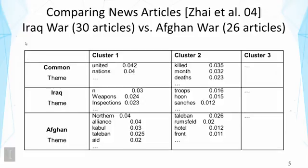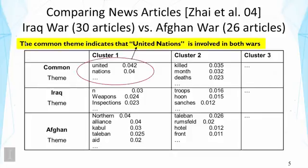Here are some simple results from using such a model — not necessarily exactly the same model, but similar models. On this slide, you see results comparing news articles about Iraq War and Afghanistan War — about 30 articles on Iraq War and 26 articles on Afghanistan War. The goal is to reveal the common topics covered in both sets of articles and the differences or variations of the topic in each of the two collections. The context is explicitly specified by the topic of collection. Results show there is a common theme — cluster one — indicating that the United Nations is involved in both wars, indicated by high-probability words like 'United Nations.'